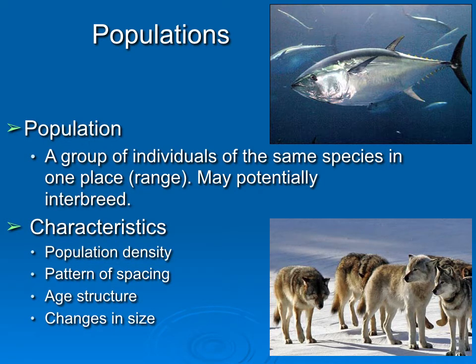Chapter 19 deals with population ecology, and populations are one of the most important units in biology because populations have characteristics individuals don't have. Over time, we're really worried about the survival and change in populations. A population is just a group of individuals living in a particular area at a particular time.